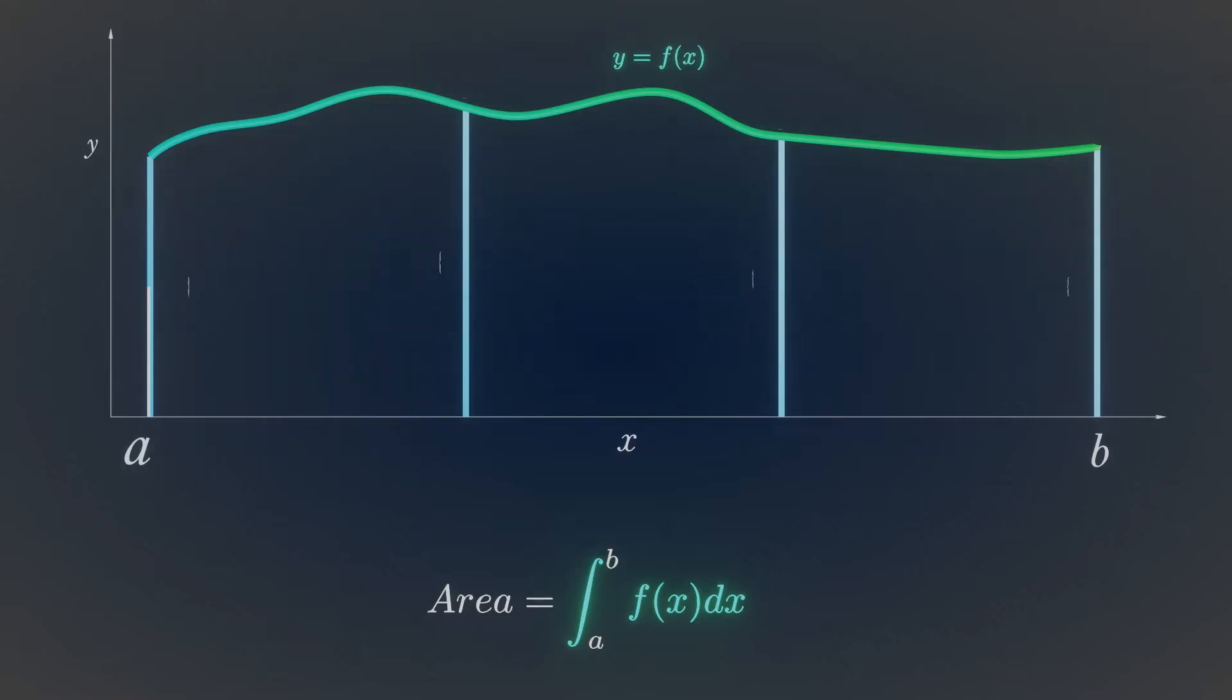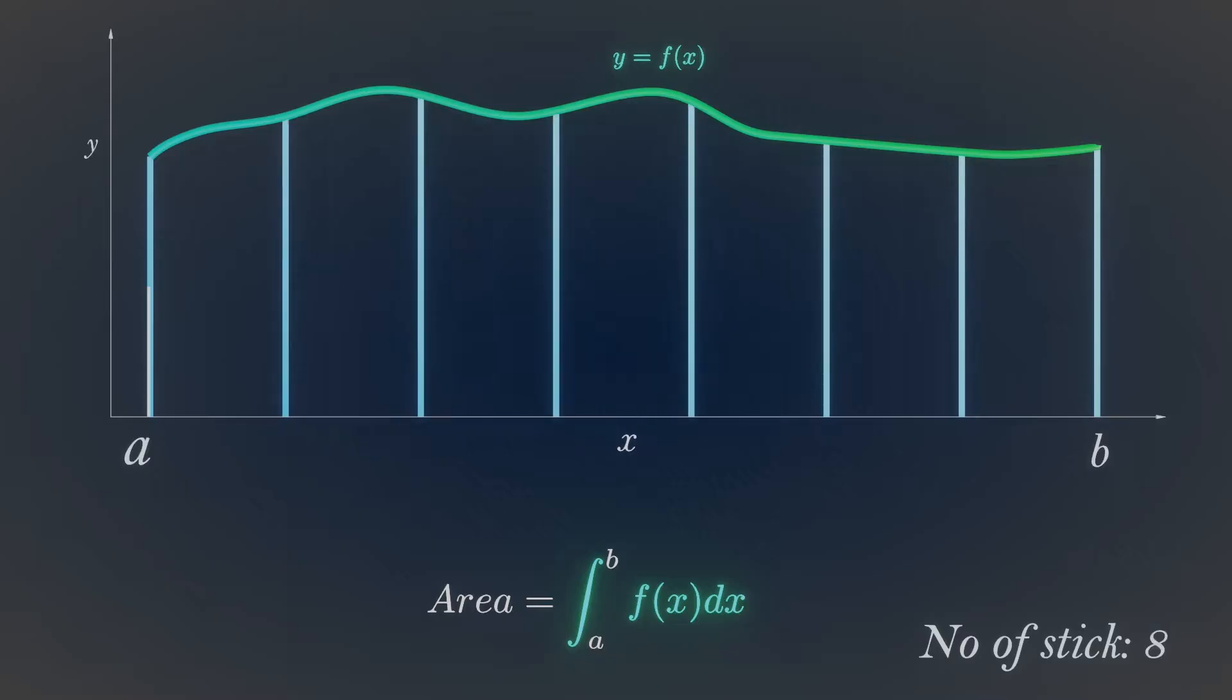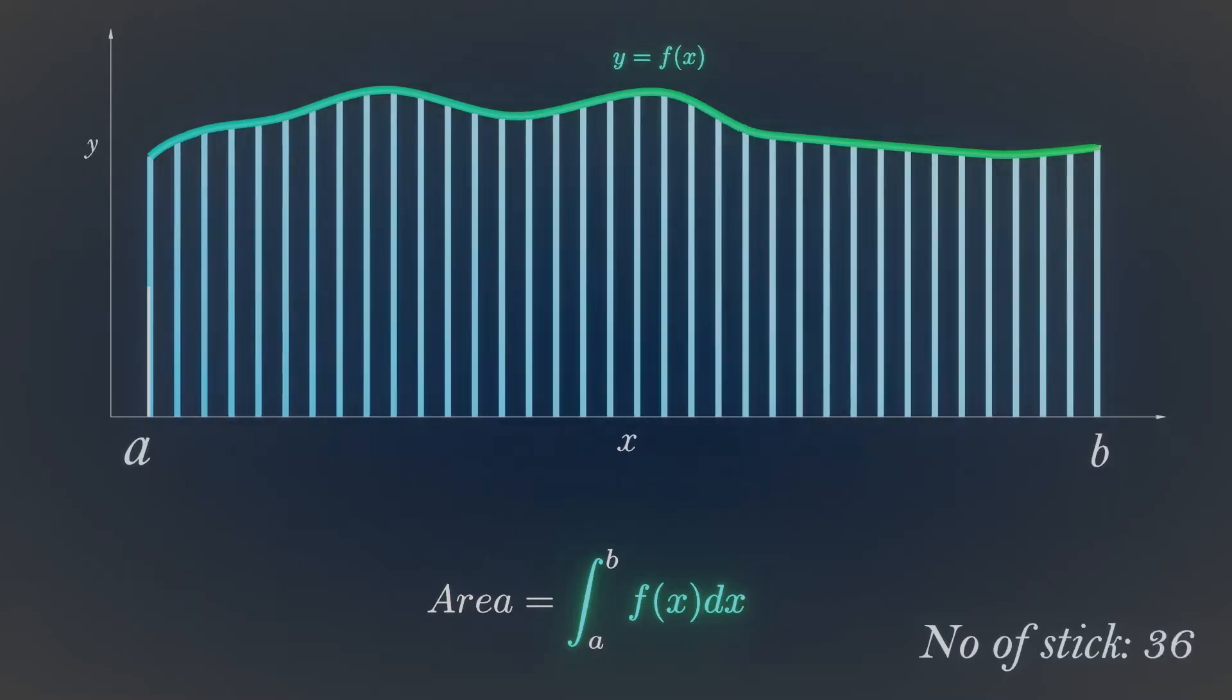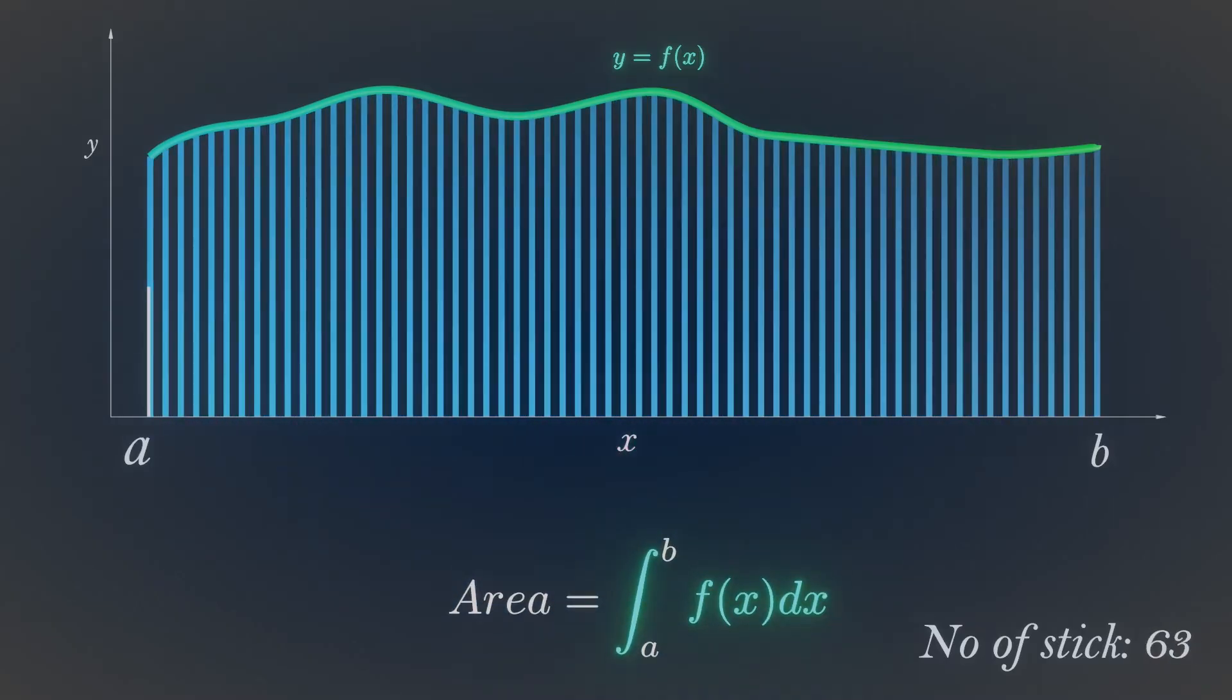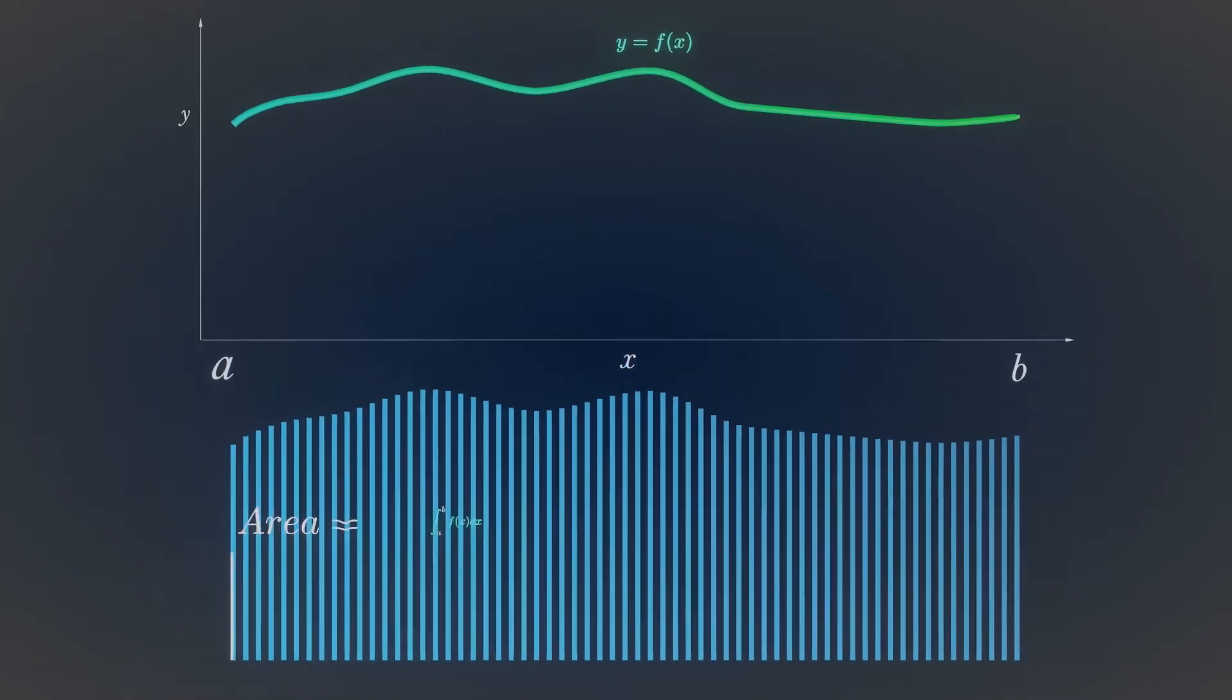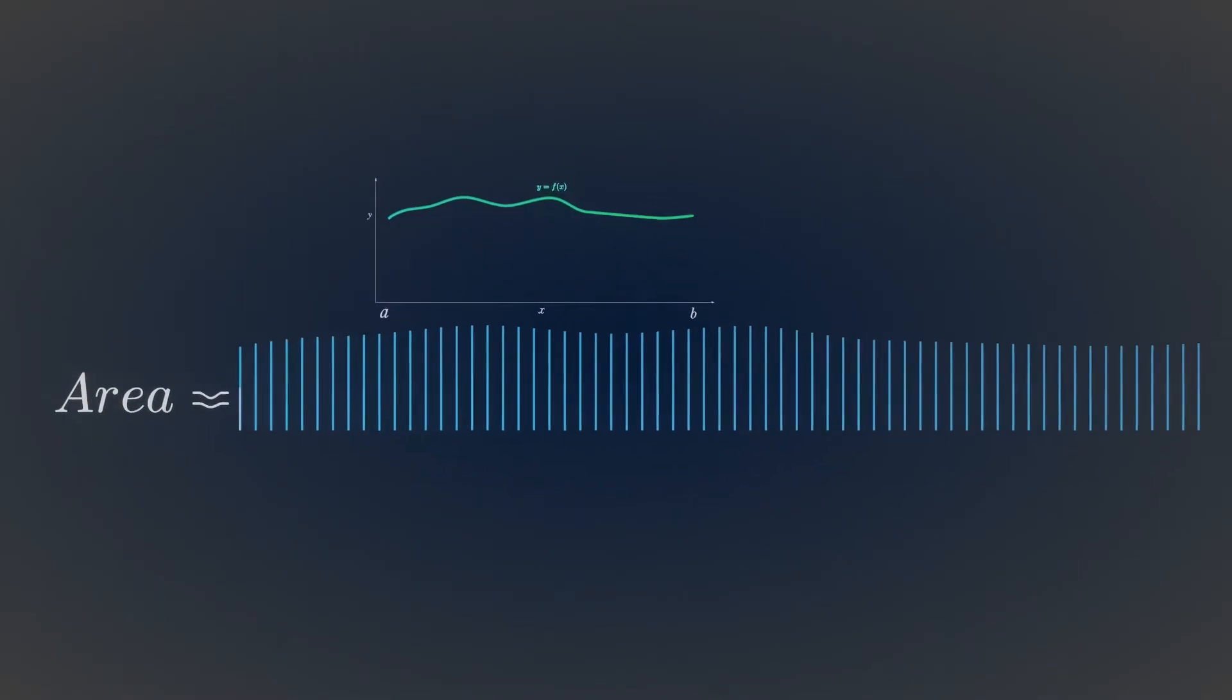Right now we only got 4 sticks. Let's keep on adding them. If you do so, you approximate the area under this curve. Just by using 63 sticks, you can easily approximate the area.